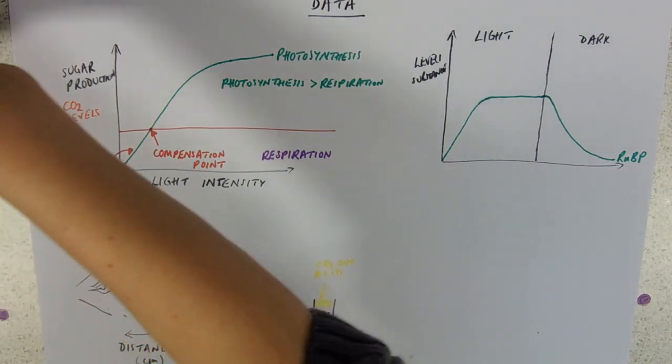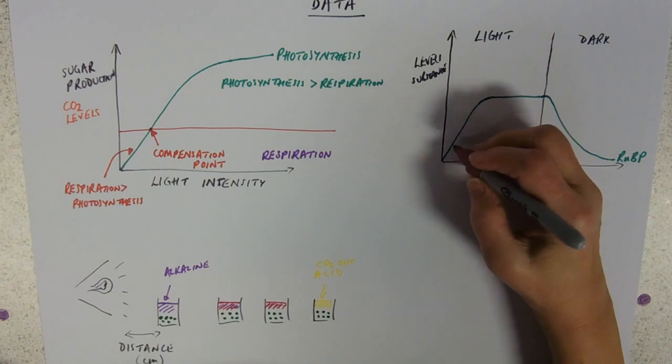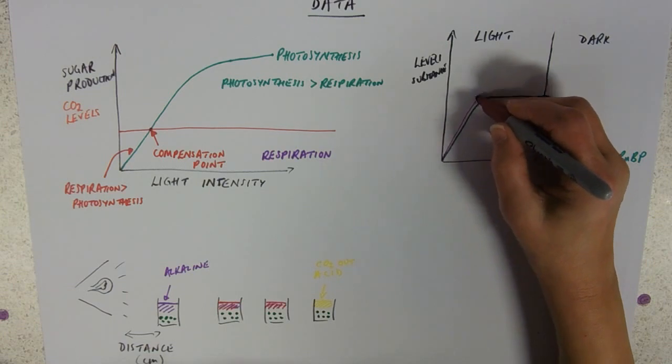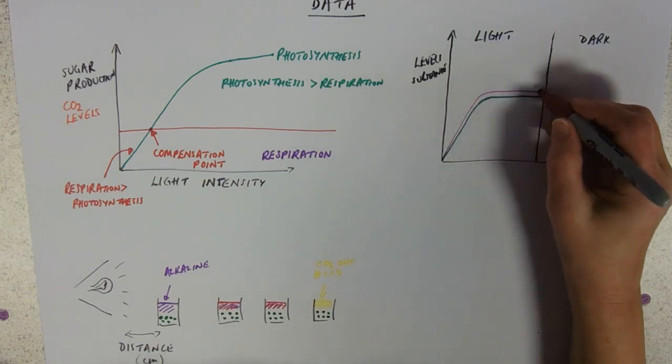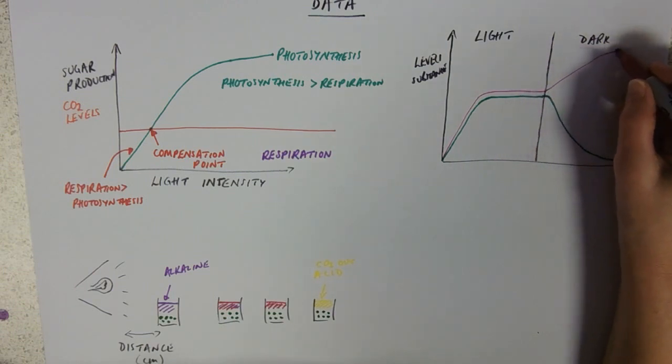Your level of phosphoglyceraldehyde, PGAL, PGA, glycerate phosphate, GP, will do the same. It'll increase. But in the dark, this will accumulate until it levels off.